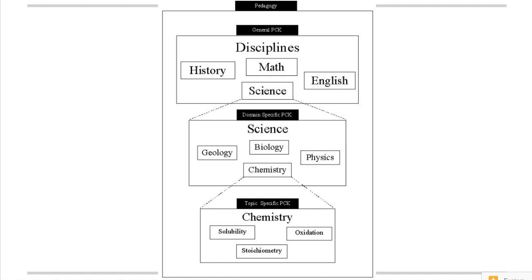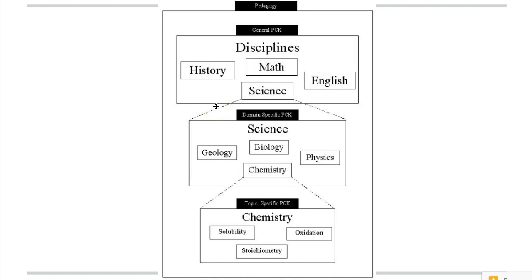To help students think about this further, we can break down PCK into levels. General PCK covers broad disciplines like history, math, English, and science. Domain-specific PCK drills further down — for example, Science PCK might include geology, biology, chemistry, and physics. Then we can get topic-specific: within chemistry we might look at solubility and oxidation. We continue to unpack from the general to the domain to the topic, all while thinking about pedagogical content knowledge.